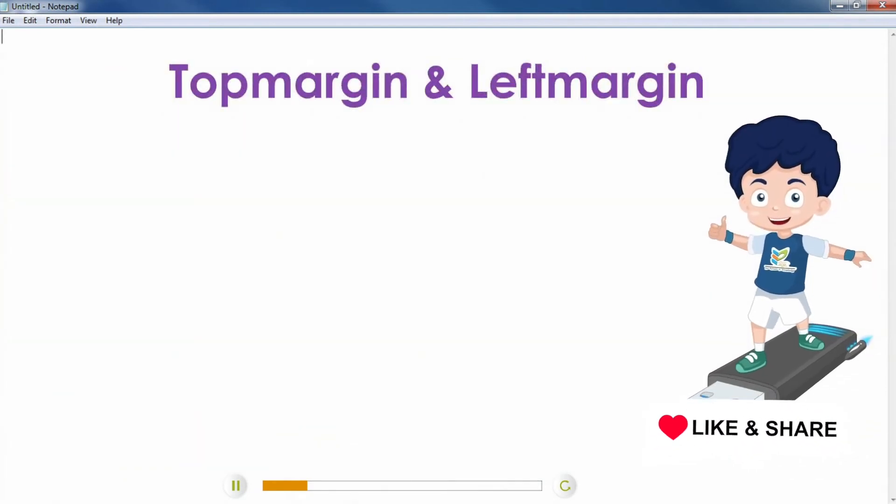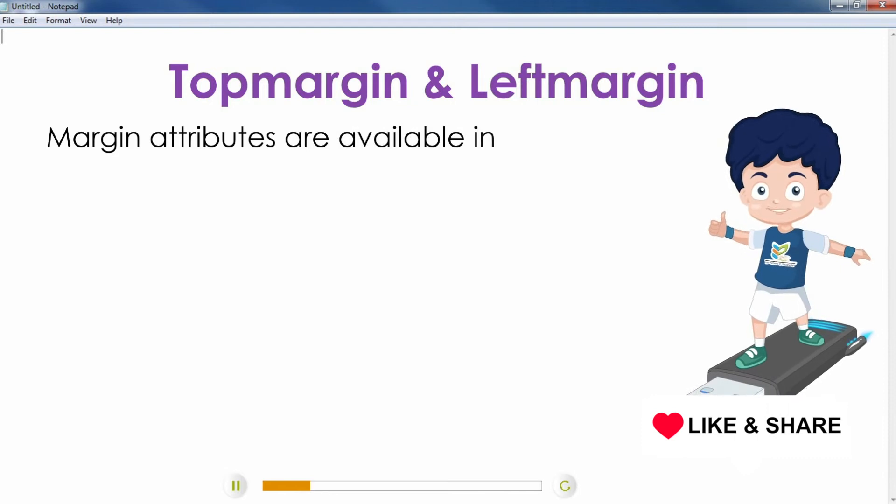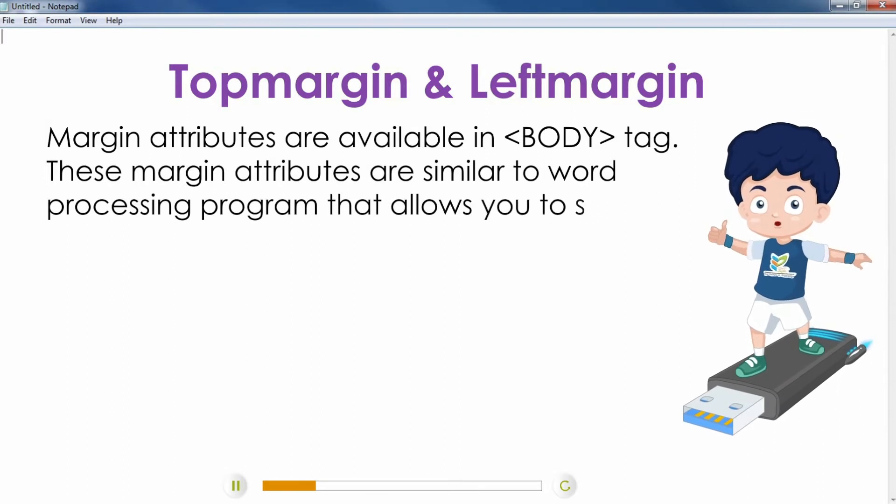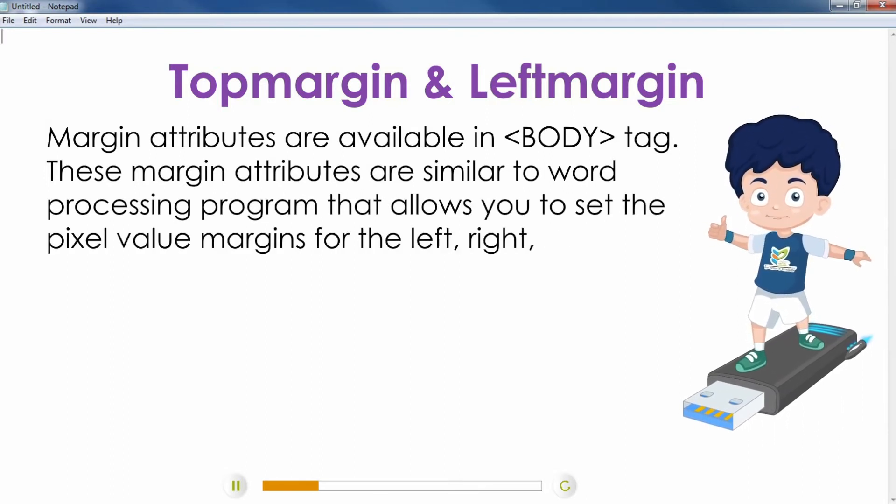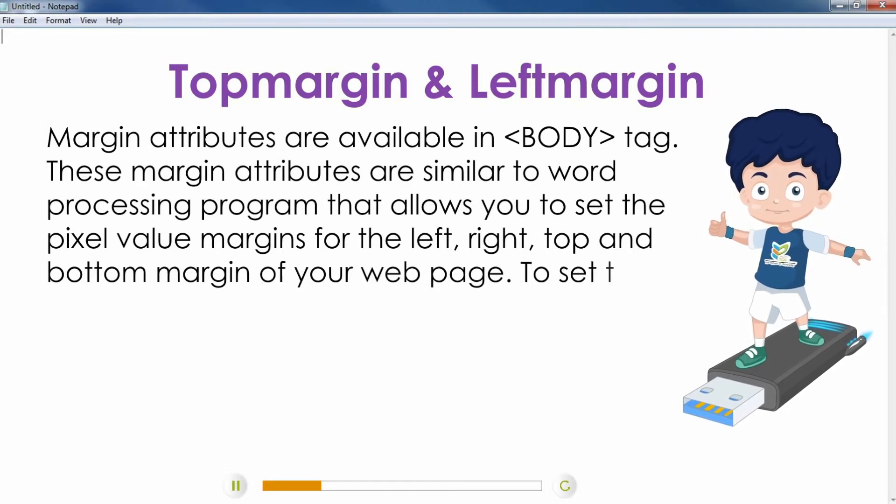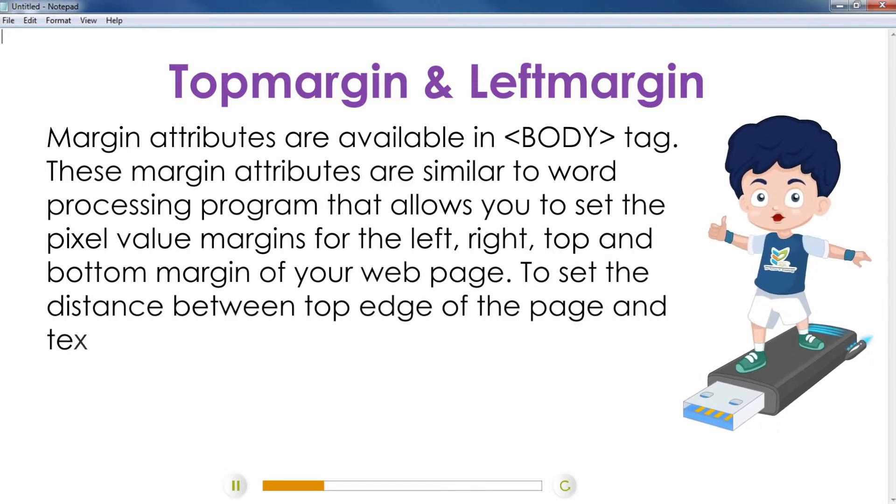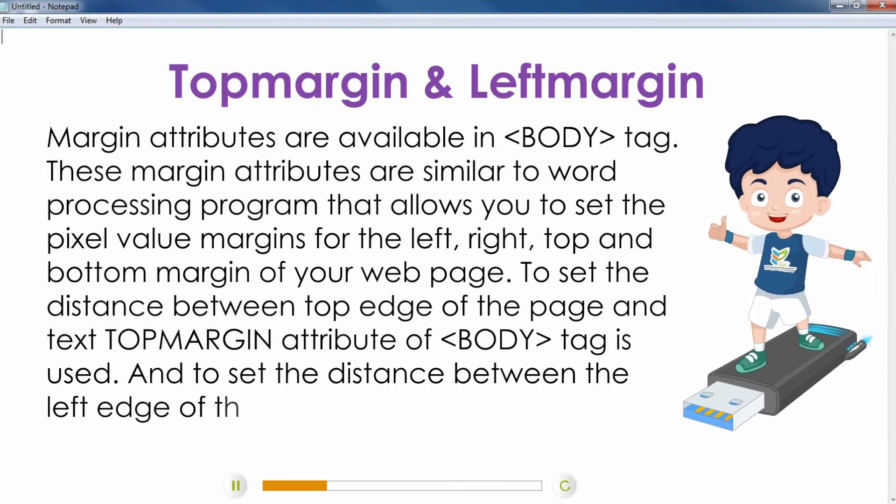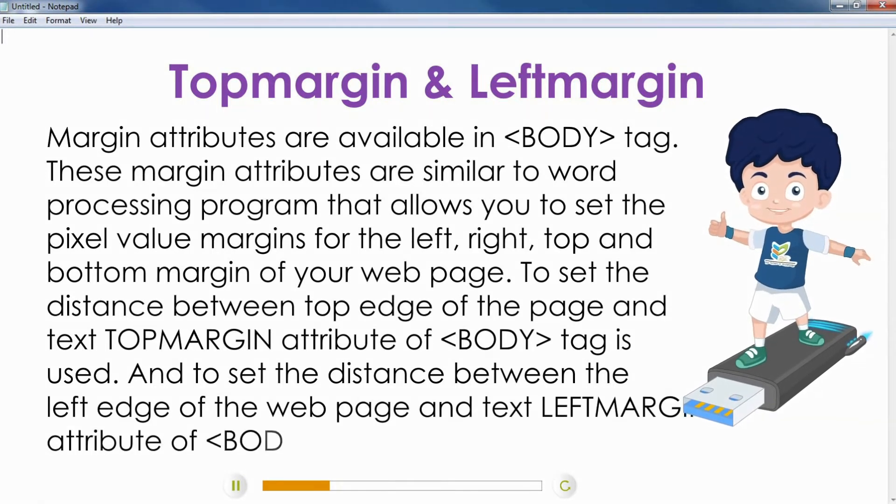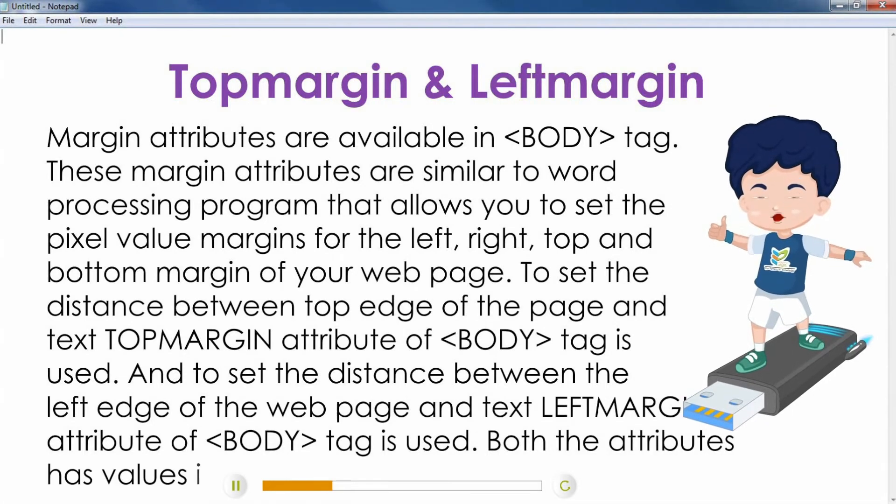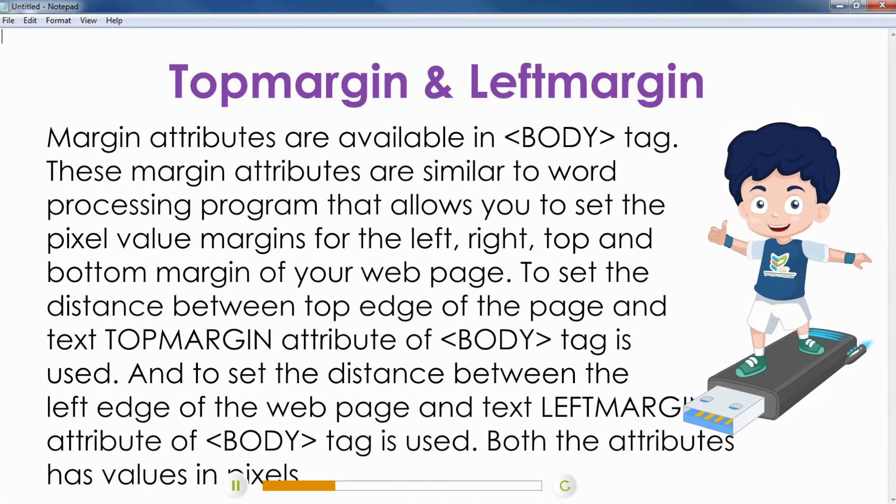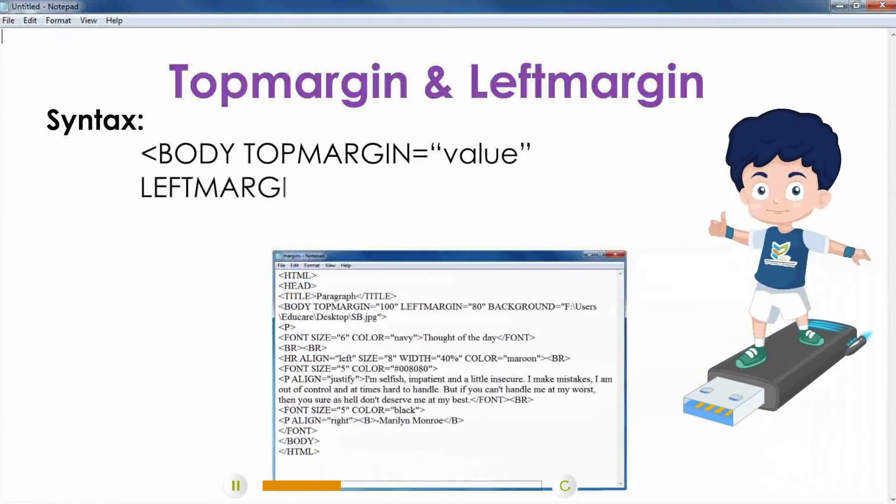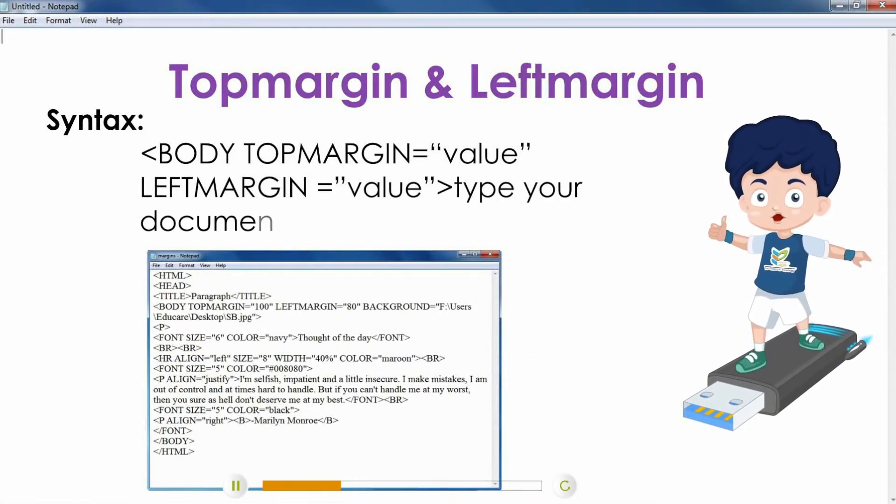Top Margin and Left Margin: Margin attributes are available in body tag. These margin attributes are similar to word processing programs that allow you to set the pixel value margins for the left, right, top and bottom margins of your web page. To set the distance between top edge of the page and text, top margin attribute of body tag is used. And to set the distance between the left edge of the web page and text, left margin attribute of body tag is used. Both attributes have values in pixels. Syntax: Body Top Margin equals value, Left Margin equals value, type your document, slash body.